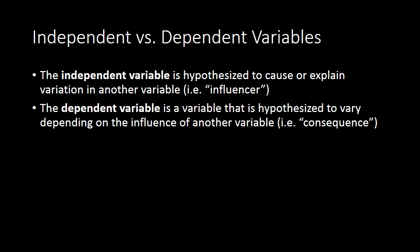When forming a hypothesis, you're usually specifying a relationship between an independent and a dependent variable. The independent variable is a variable that's hypothesized to cause or explain variation in another variable — think of it as the influencer. The dependent variable is hypothesized to vary depending on the influence of the independent variable. So the independent variable is the cause; the dependent variable is the effect. The independent variable has an influence on the dependent variable.